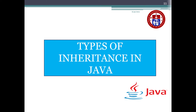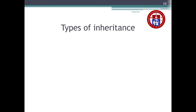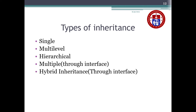In this video I'm going to explain the various types of inheritance in Java. There are five different types: single inheritance, multi-level inheritance, hierarchical inheritance, multiple inheritance, and hybrid inheritance. Both multiple and hybrid inheritance can be implemented through interfaces. This video I'm going to explain the first three types: single, multi-level, and hierarchical.